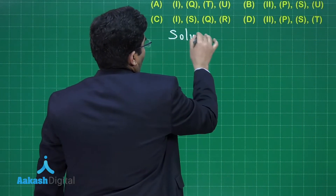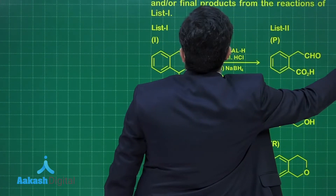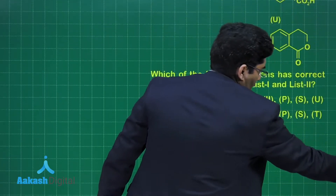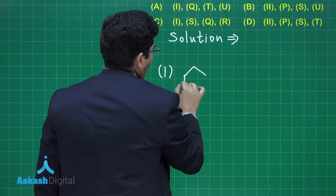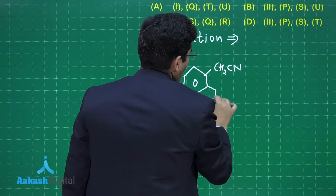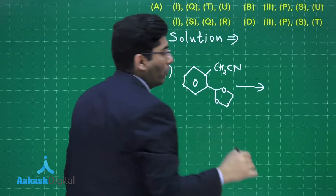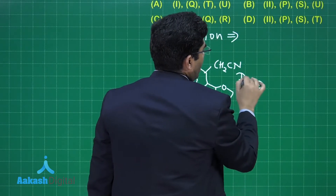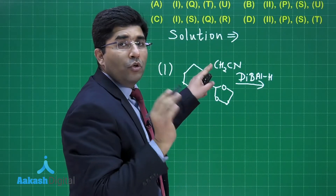The first reaction given to us has a benzene ring with CH₂CN attached, and a pentagonal (acetyl) ring attached. Now, what is being done here? DIBAL-H is being added. If we add DIBAL-H to this compound, the cyanide group will get reduced to an aldehyde.